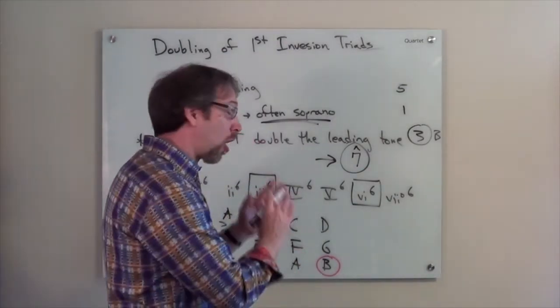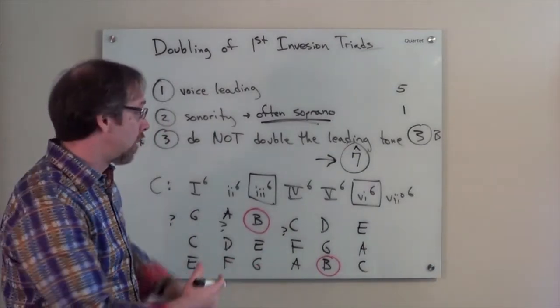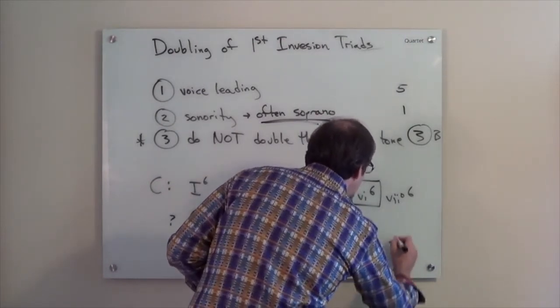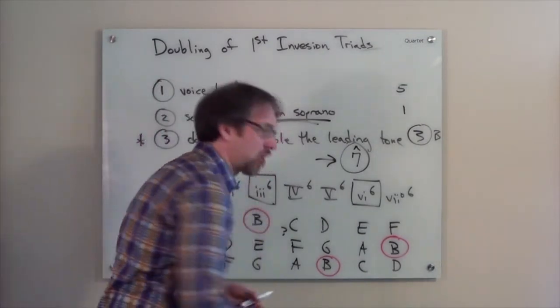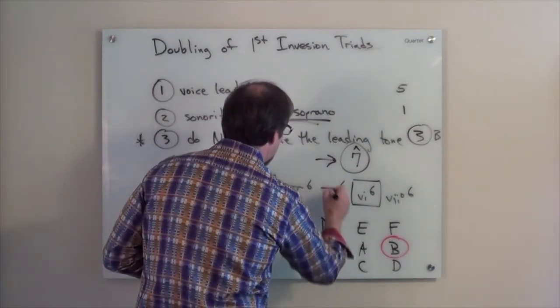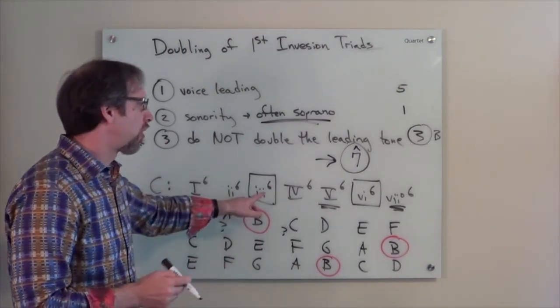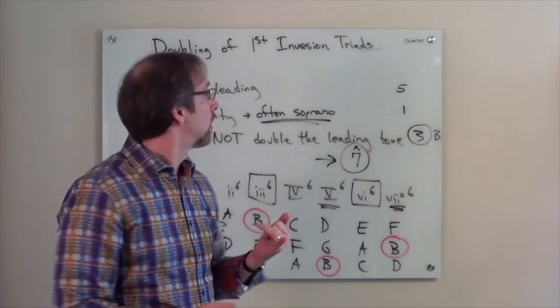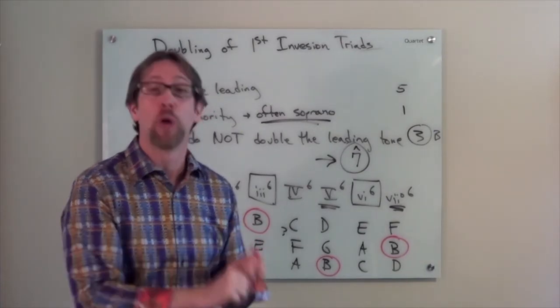I mentioned before that the six chord is almost always found in root position, but theoretically it would be A, C in the bass, and then E. None of those are scale degree seven, so double whatever you want. Our seven diminished would be B, D in the bass, and F. Here again, we have a B in our key of C, which is our leading tone, and it's functioning like the leading tone. Both our five chord and our seven chord, this is where we need to be worried about our doubling of first inversion triads. It's really in only those two. But if you see a five chord in first inversion, don't double the third of the chord. When you see a seven diminished sixth chord, don't double the root of that chord. Don't double the leading tone.